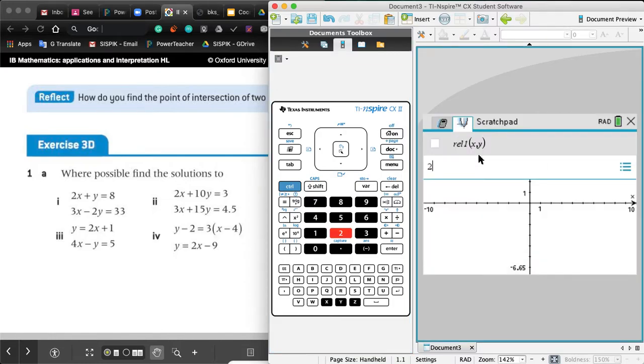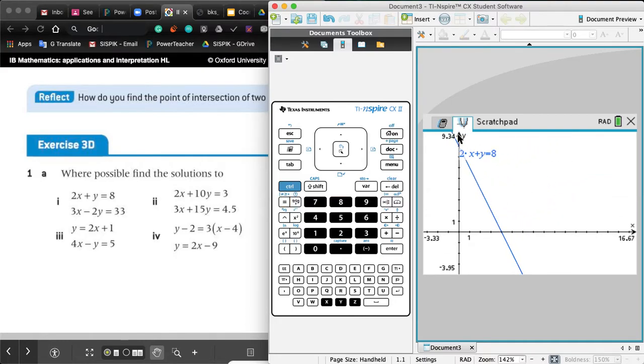Now insert 2x + y = 8. There you go, you get a straight line. The gradient is going to be negative because it's downwards.